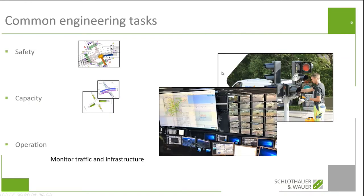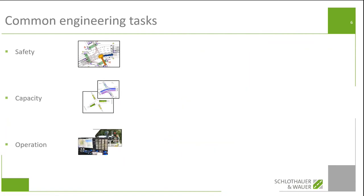The third challenge — maybe not something everyone has to deal with if you're only involved in designing intersections — is operation. When we're looking from the perspective of a city, a municipality, or a provider of mobility services, we have to think about how our solutions work in the field: how can we maintain them, how easy is it to change parameters, how can we react to changing demand or a changing city, and how easy is it to fix problems? So: safety, capacity, and operation — these are the tasks we have to deal with.